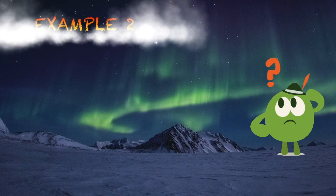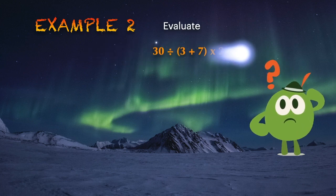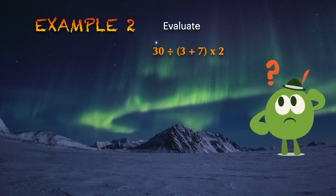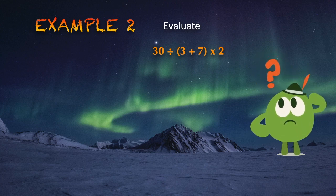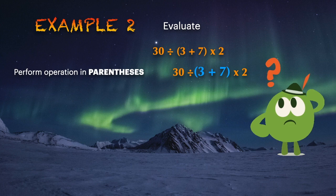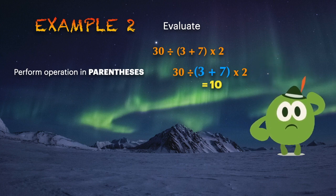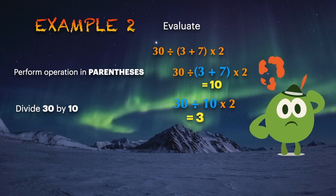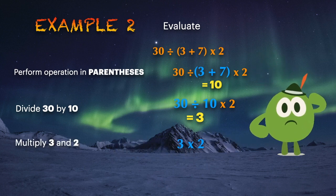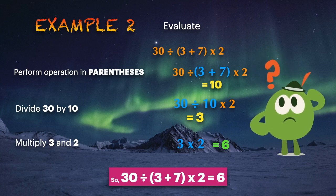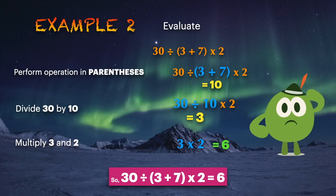Let's have another example: evaluate 30 divided by (3 plus 7) times 2. Using the order of operations, perform the addition in parentheses first, then multiply and divide from left to right. First, perform 3 plus 7, which equals 10. Second, divide 30 by 10, which gives a quotient of 3. Then multiply 3 and 2, which gives 6. So 30 divided by (3 plus 7) times 2 equals 6.